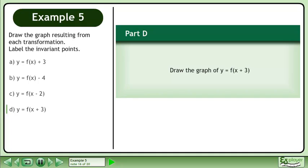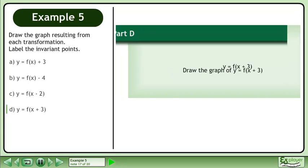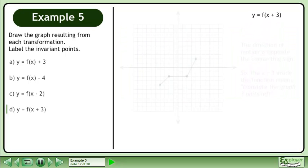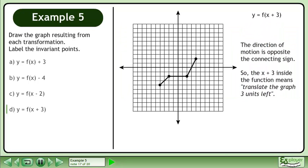In Part D, we'll draw the graph of y equals f(x plus 3). The direction of motion is opposite the connecting sign. So the x plus 3 inside the function means translate the graph 3 units left.